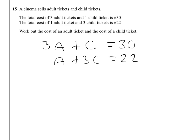Now I'm going to leave the first equation alone, so I'll just write it again, 3A plus C equals 30. And I'm going to multiply the second equation, let's just call them 1 and 2. So I'm going to multiply the second equation by 3, so each part must be multiplied by 3. So it's 3A plus 9C equals 66.